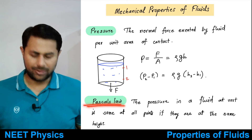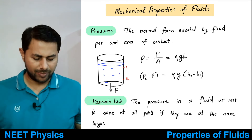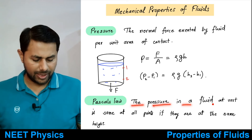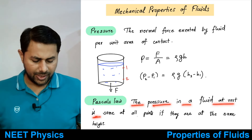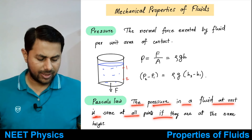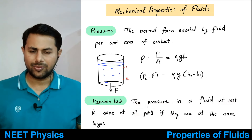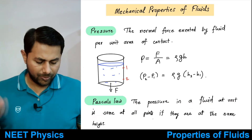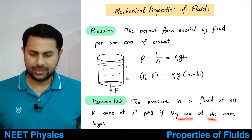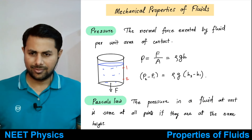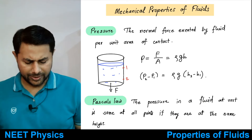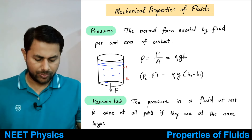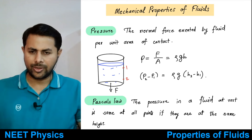Next is Pascal's law. Pascal's law says that the pressure in a fluid at rest is the same at all points if they are at the same height. When points are at the same height, the pressure due to the fluid at all those points would be equal.